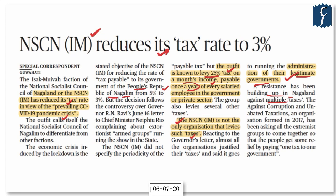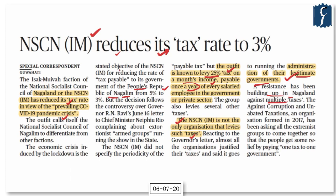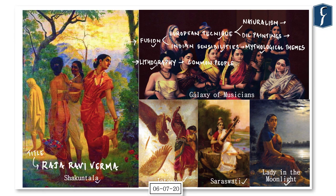In the discussion related to Raja Ravi Varma, remember the fusion of European technique and Indian themes. He also founded a printing press to print his works for common people. His famous paintings are Shakuntala, Galaxy of Musicians, Jatayu, Saraswati, Lady in the Moonlight, and Nair Lady Adorning Her Hair.